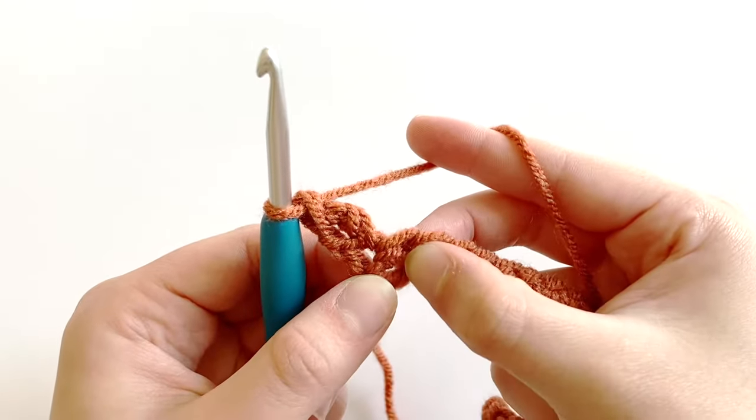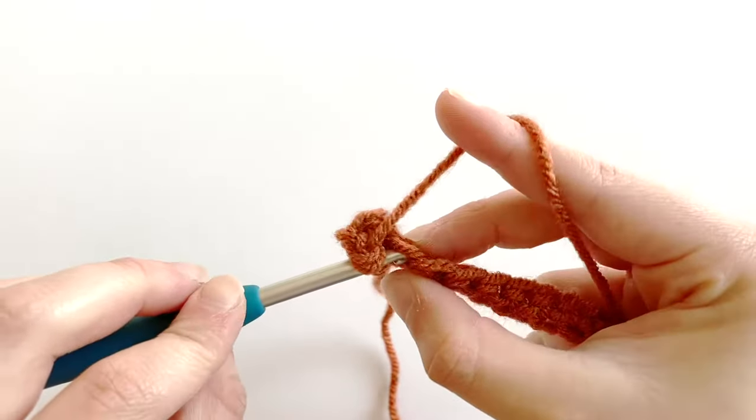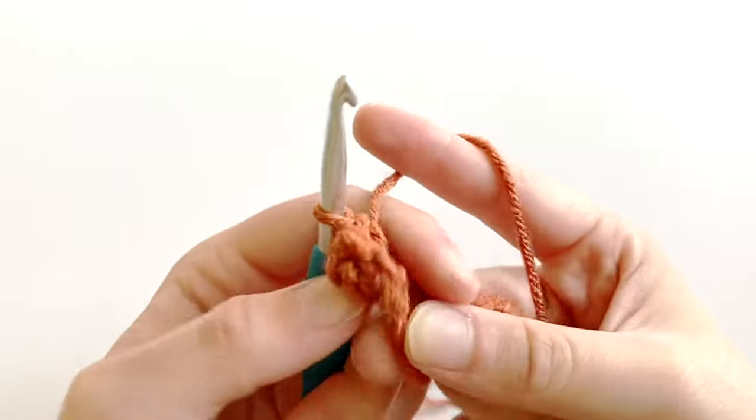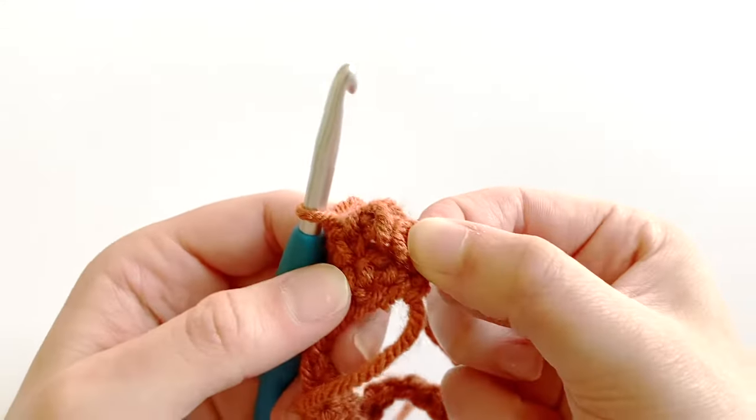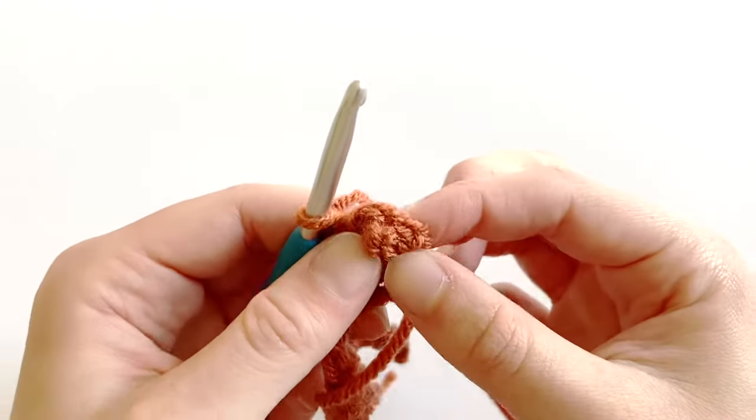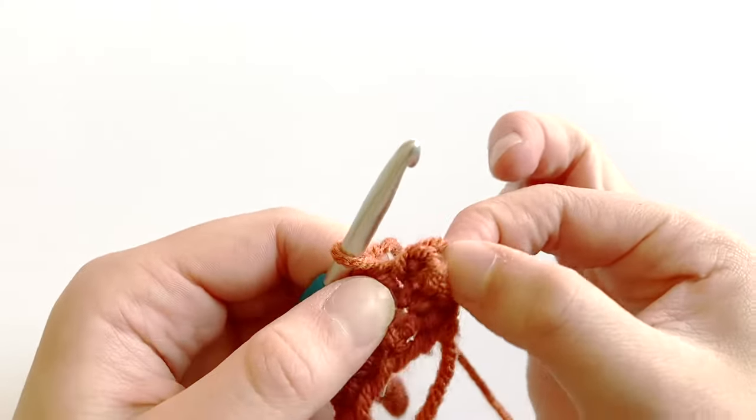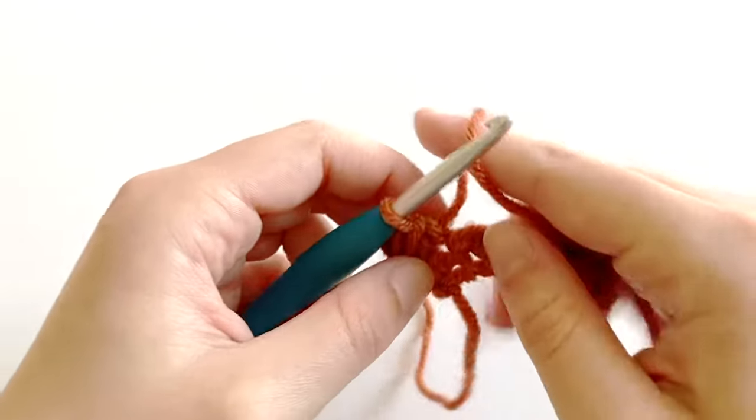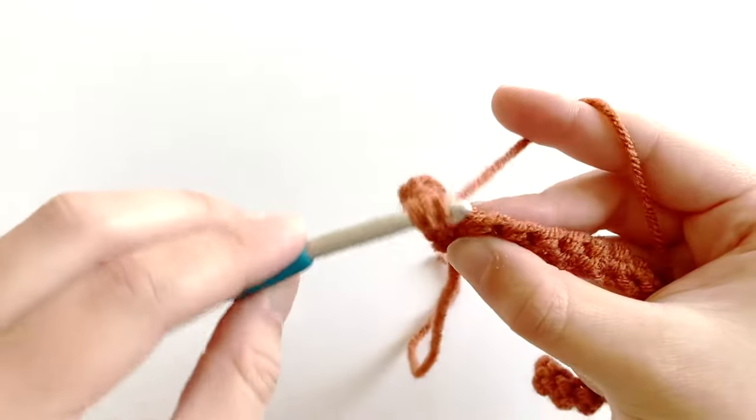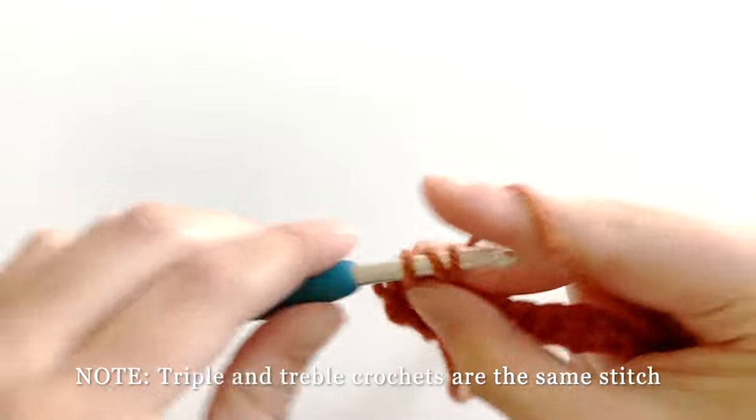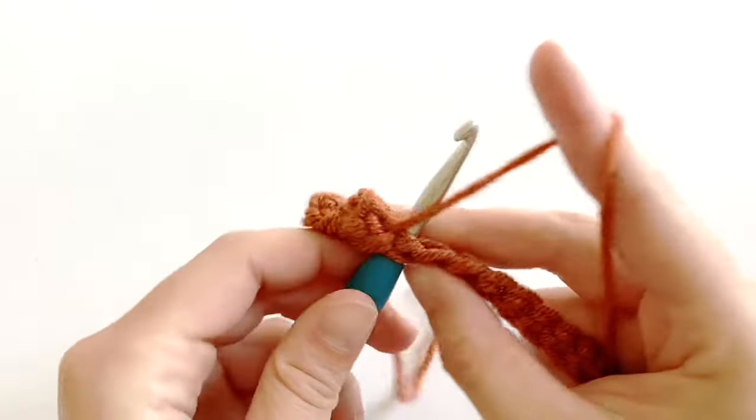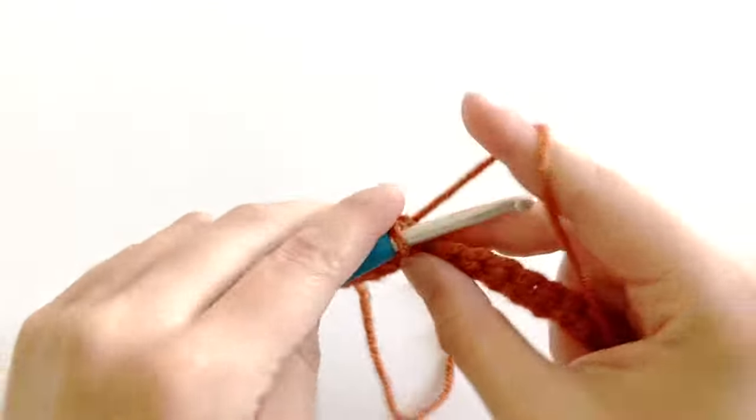And then in that second stitch, work one single crochet. And if you flip over your work, you can see that the triple crochet creates like a little mini bobble. So now turn back around and in that next stitch work one triple crochet, and then the next stitch one single crochet.